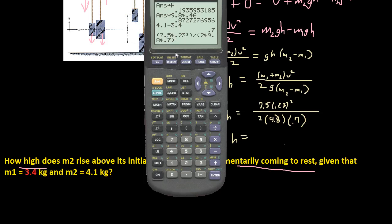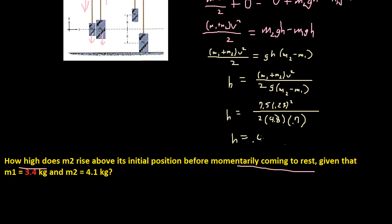So 7.5 times 0.23 squared, all over 2 times 9.8 times 0.7. So if you do that, you get 0.029 meters. And since you have to, so let me actually write this down, so 0.029 meters.